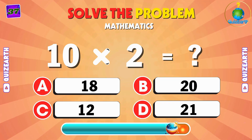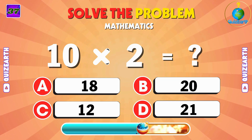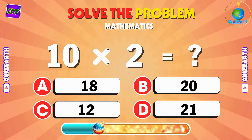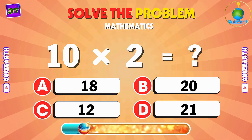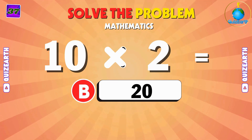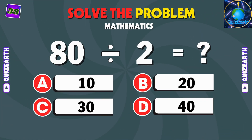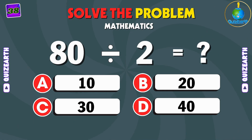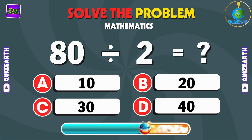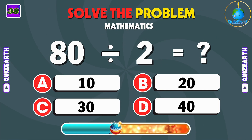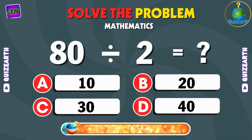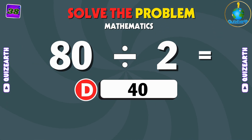Multiply 10 by 2 — easy or hard? B: 20. Divide 80 by 2 — what's the answer? 40.